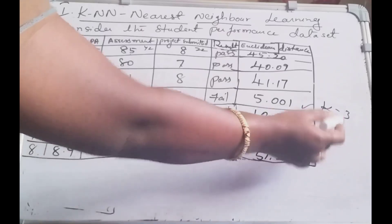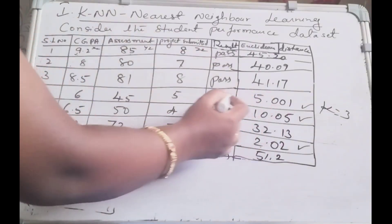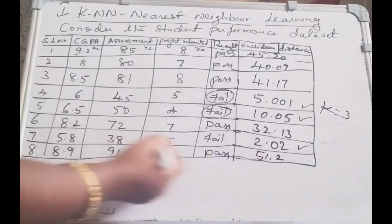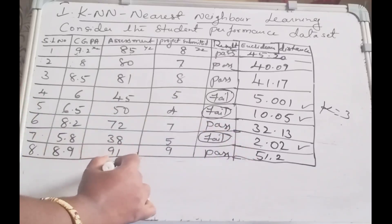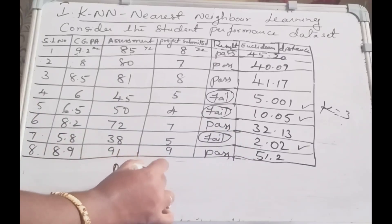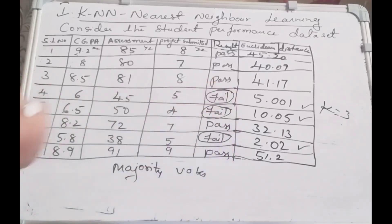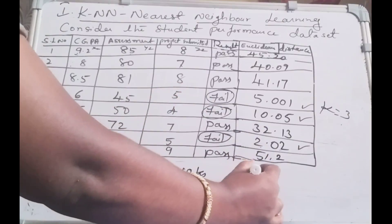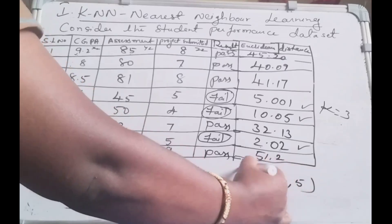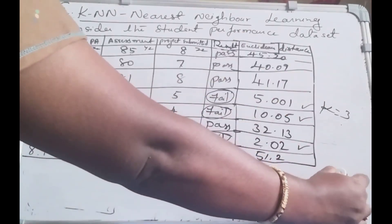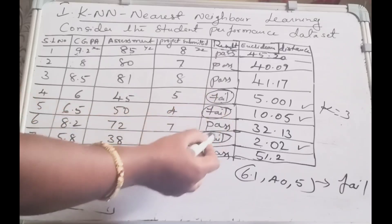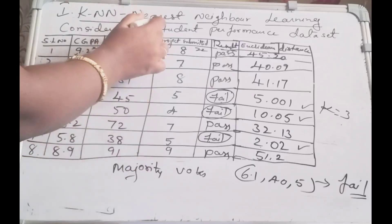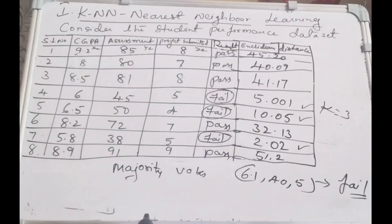These are the 3 nearest neighbors close to our test instance. Observing their class: instance 4 is fail, instance 5 is fail, and the 7th instance is also fail. To predict the test class we use majority vote — all 3 neighbors predict fail. So our test instance (6.1, 40, 5) falls under the result category fail. This is how we compute the nearest neighbor of a testing instance. Hope you have understood. Thank you. Please subscribe to my channel.